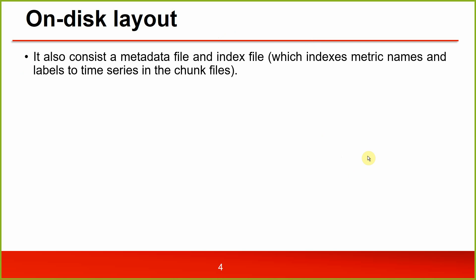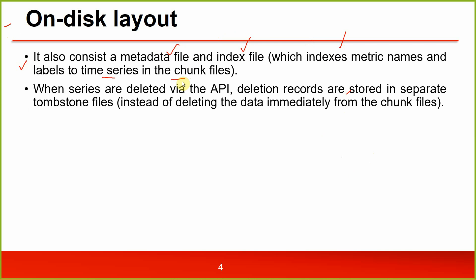The on-disk layout also consists of a metadata file and an index file which indexes metric names and labels to time series in the chunk files. When series are deleted via the API, deletion records are stored in separate tombstone files instead of deleting the data immediately from the chunk files.